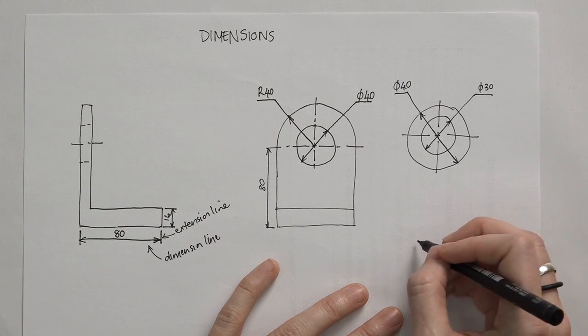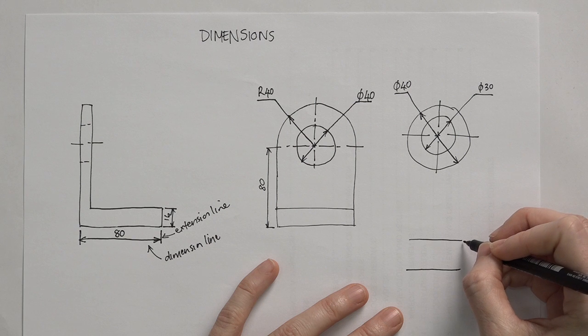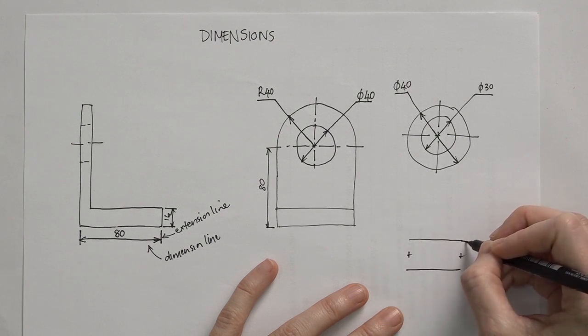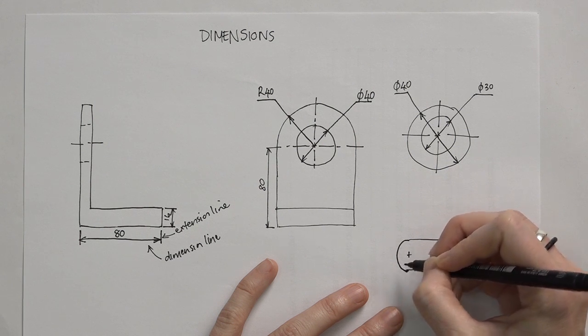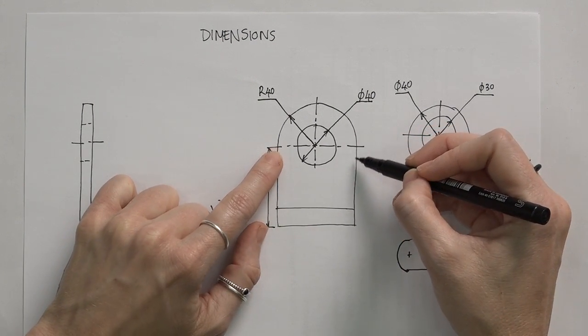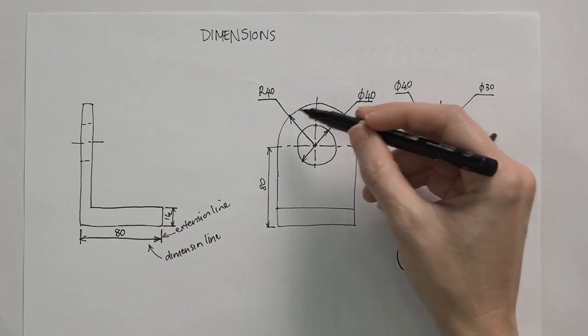Another specific case that we do with circles, so if we for example have a slot section. So this is a very specific case. So remember in general when we have a full circle or anything bigger than a half circle, anything between a half circle and a full circle, we use the diameter. If we have a half circle and smaller, we use the radius.